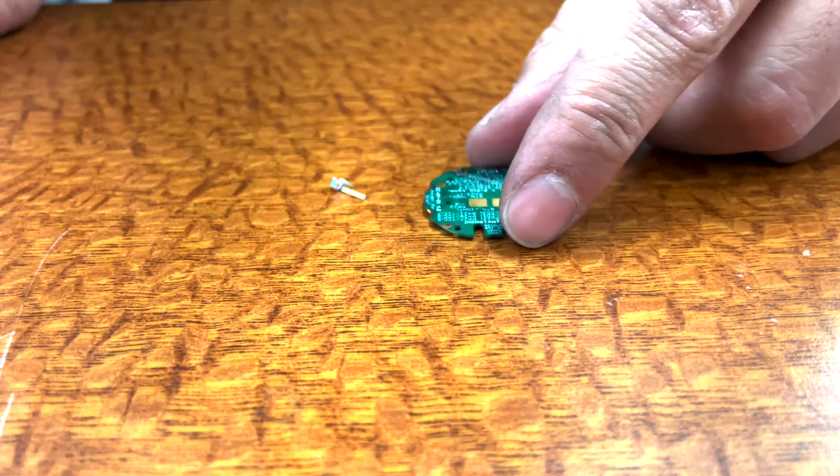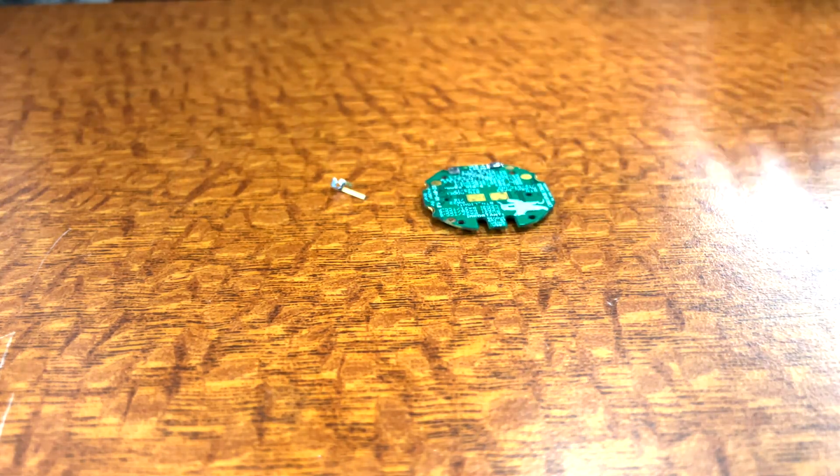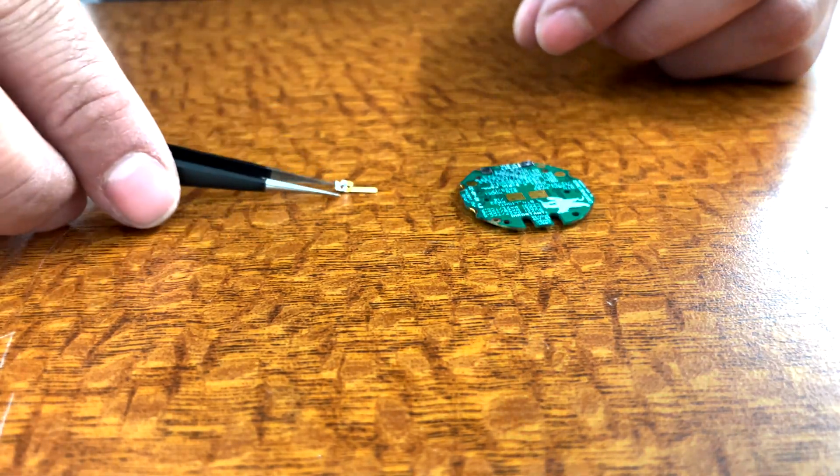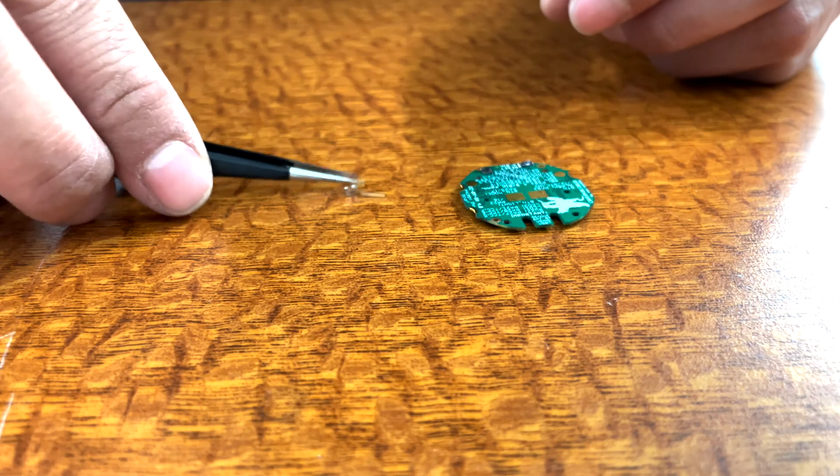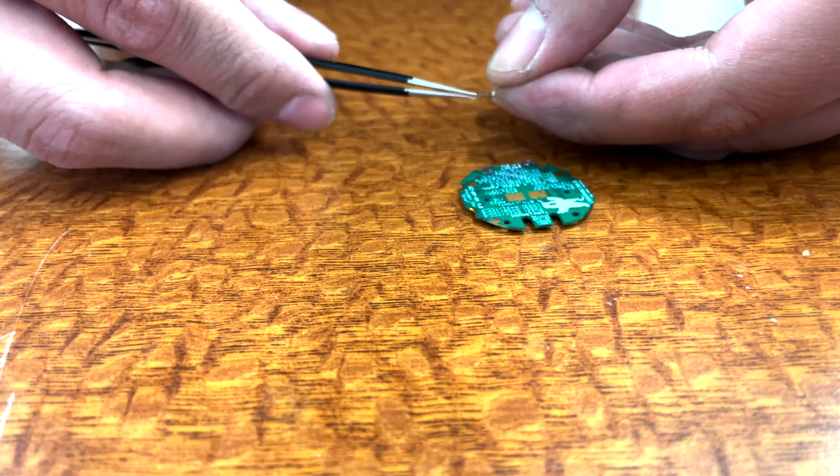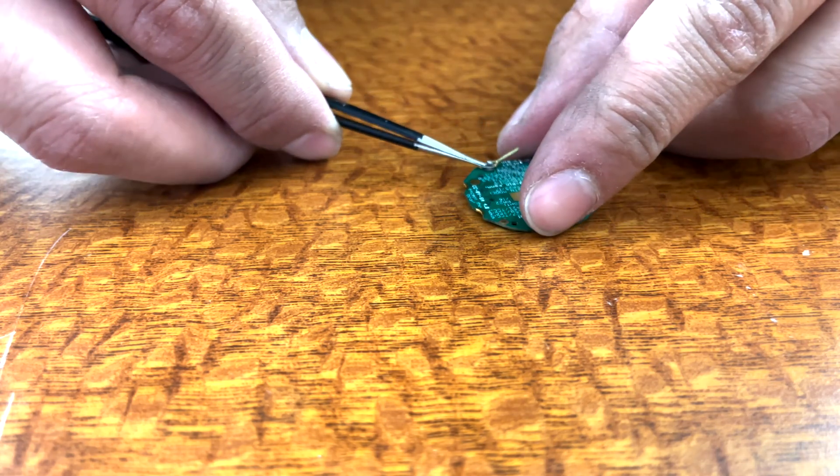Next, grab your sensor watch board. The sensor watch board has an exposed pad in the same location as the buzzer connector on the original movement. Once the small metal buzzer clip has cooled down, use your hands to carefully place it on the exposed pad at the bottom of the sensor watch circuit board.